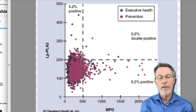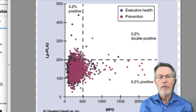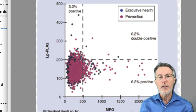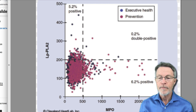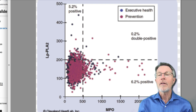PLAC-2 is like myeloperoxidase — both are enzymes released by our own immune system. As those enzymes are released, their job is to digest and make liquid out of that waxy plaque. Unfortunately, that liquid plaque, if it gets out into the bloodstream, can cause a heart attack. Thank you again for your interest.